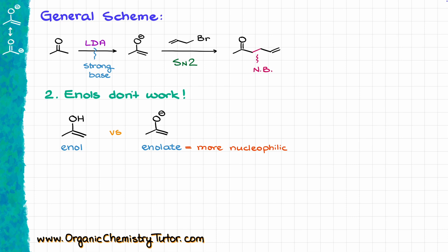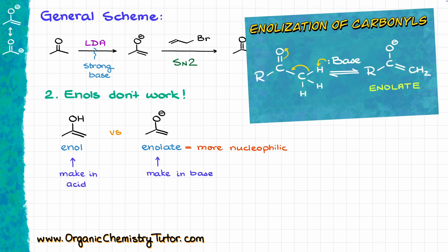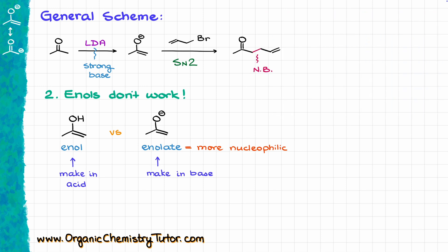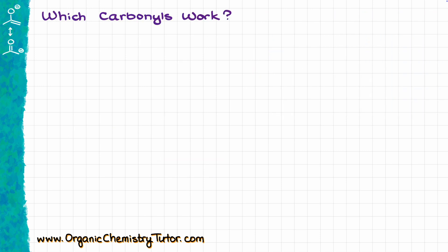Always use enolate instead. This mistake is easy to avoid because we are using basic conditions here, and enolates are made in base while enols are produced under acidic conditions. Since we are not using acidic conditions, we are not making any enols. If you need a refresher on keto-enol tautomerism and enolization of carbonyls, I have a dedicated video on that. Now, since we are talking about alpha substitution in carbonyls, it's a good idea to review which carbonyls are actually useful in this reaction.